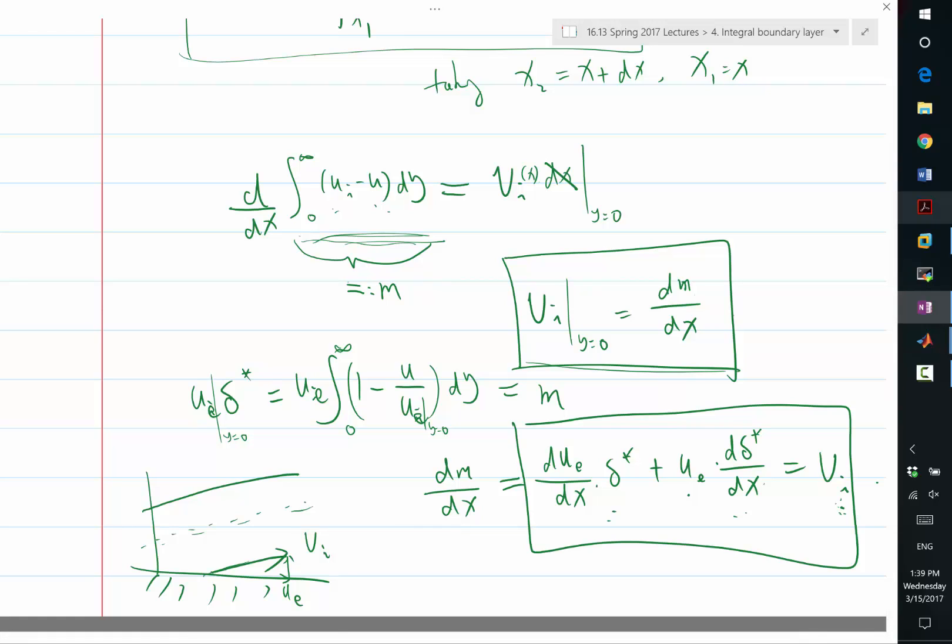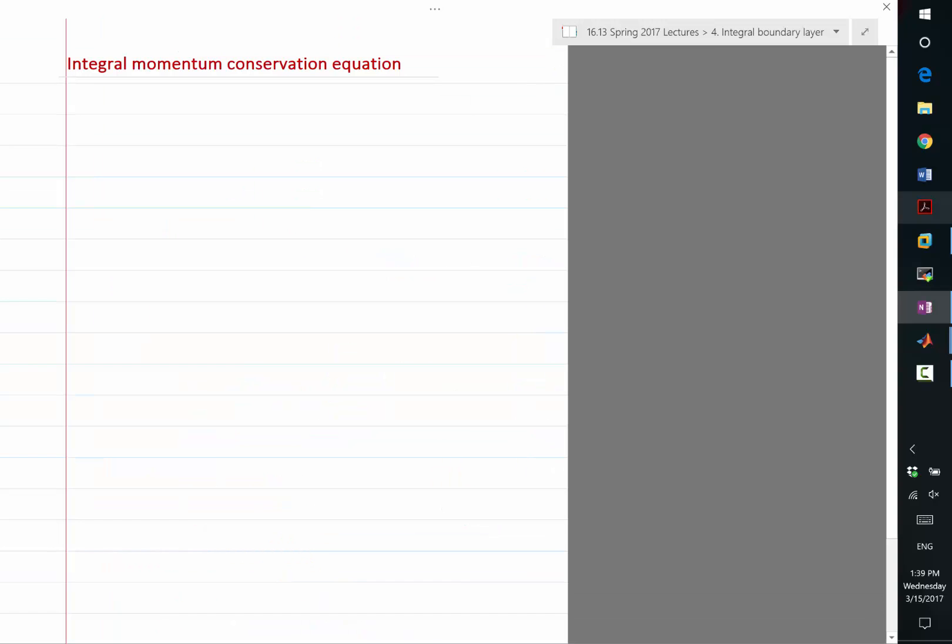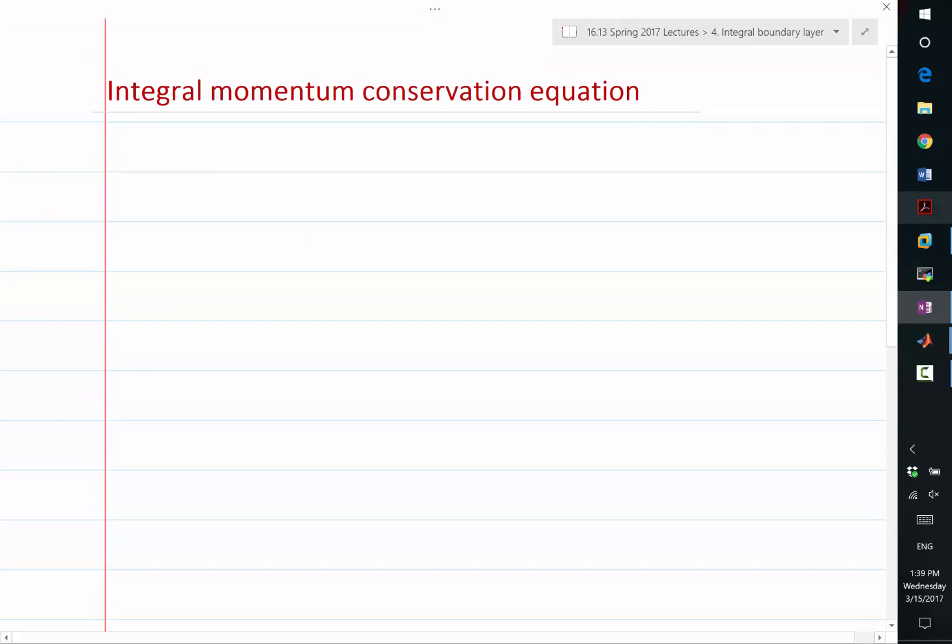But magic happens when you not only consider the mass conservation equation, but also the momentum conservation equation. In particular, we are only looking at the x-directional momentum conservation equation. Again, think of the wall, we have a boundary layer going in, we have a boundary layer coming out. We choose the same control volume as before.